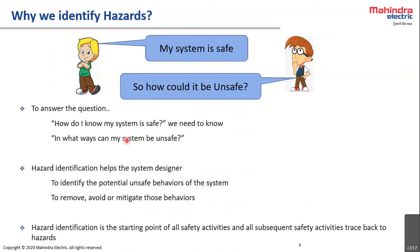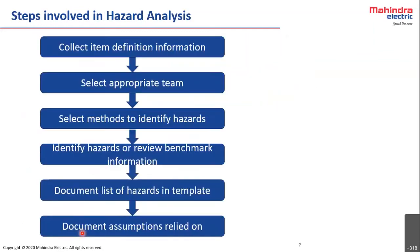Hazard identification helps the system designer identify potential unsafe behaviors of the system and helps to remove, avoid, or mitigate those behaviors. Hazard identification is a very important activity — it is the starting point of all safety activities, and all subsequent safety activities trace back to the hazard analysis.